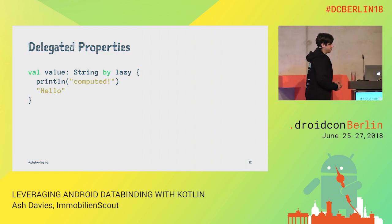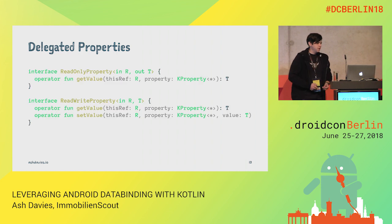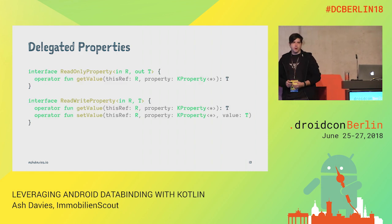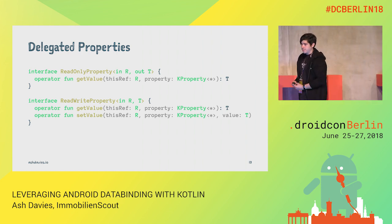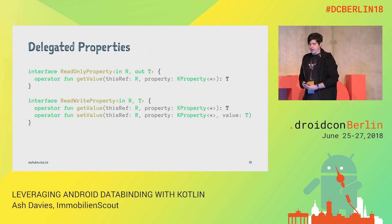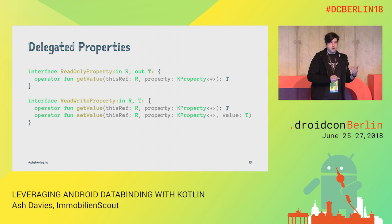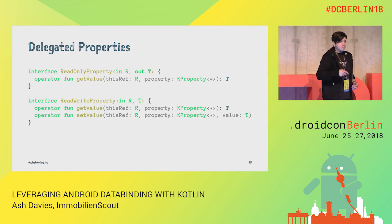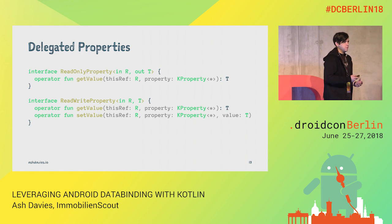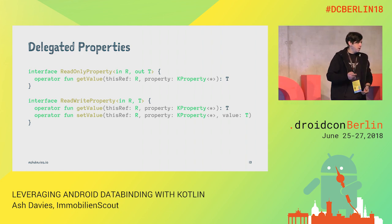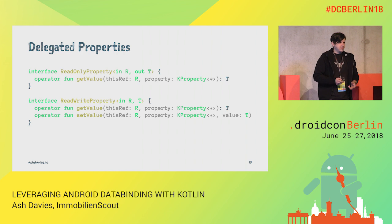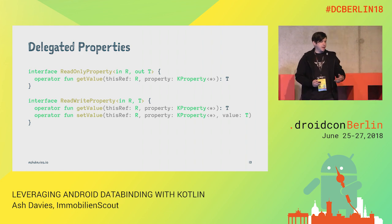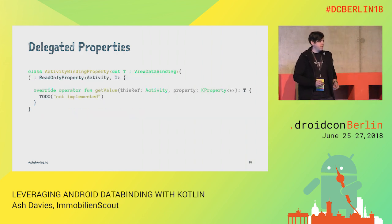Kotlin gives us two interfaces to use when we want to create our own delegate properties: the read-only property and the read-write property, for value properties and variable properties respectively — one is immutable and one is mutable. We have to implement these methods to provide the functionality. For our activity binding delegate, we want to use an immutable property, so the read-write property.